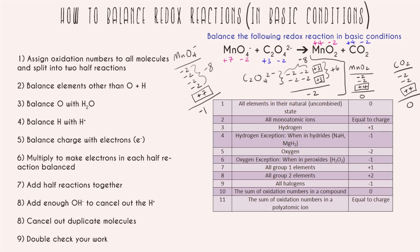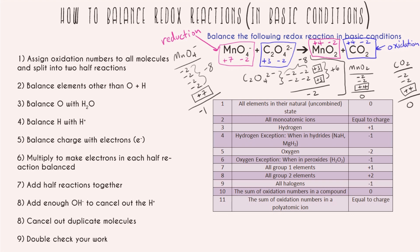Comparing the oxidation numbers: manganese is going from positive seven to positive four — it's getting more negative, meaning electrons are being added, so this is the reduction half reaction. Carbon is going from positive three to positive four — it's getting more positive, so it's the oxidation half reaction. Now let's make some space and start splitting these into two different reactions.